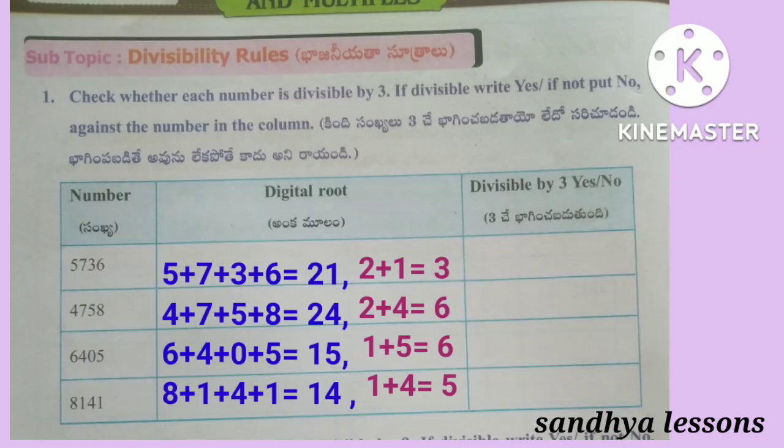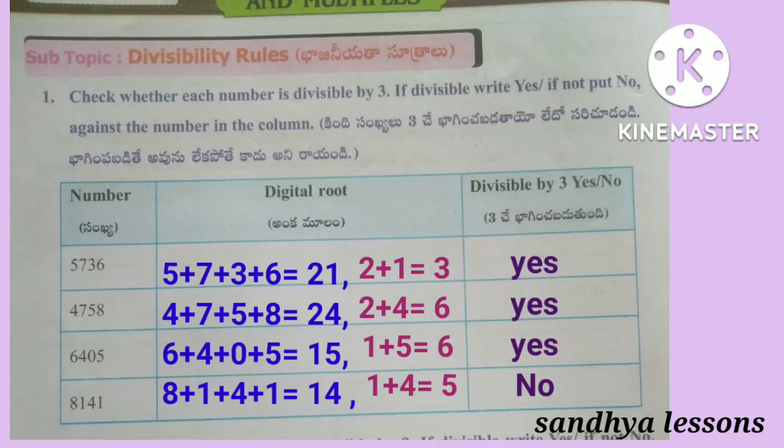The digital root of 5,736 is 3, so it is divisible by 3. The digital root of 4,758 is 6, so it is divisible by 3. The digital root of 6,405 is 6, so it is also divisible by 3. The digital root of 8,141 is 5, so it is not divisible by 3.